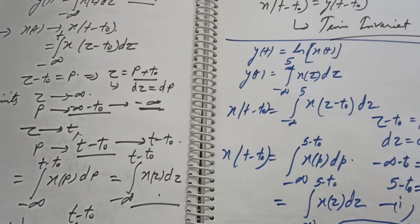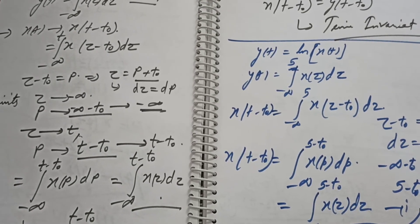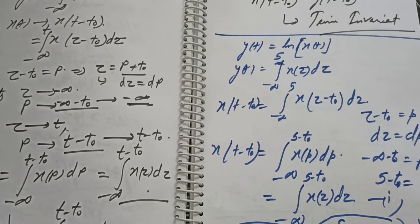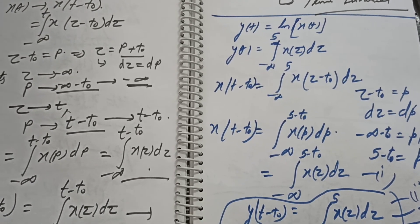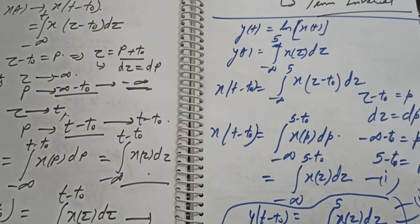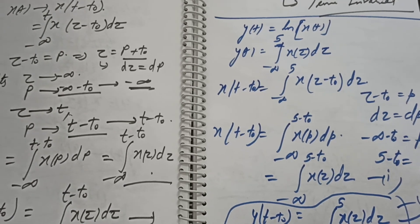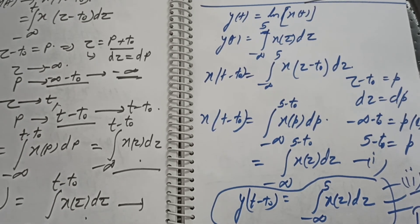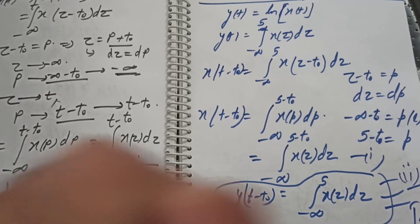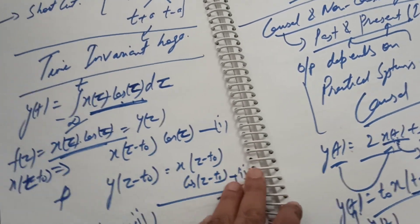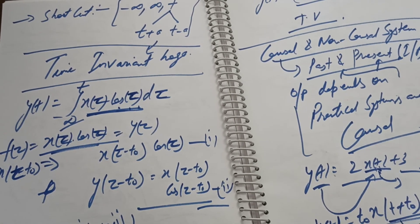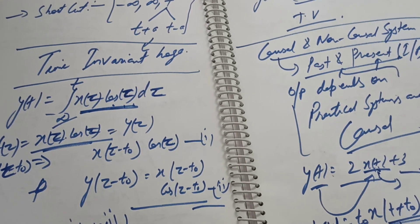Let's take another example: y(t) = ln(x(t)). You can also check y(t) = integral from minus infinity to 5 of x(τ) dτ. The common approach is to put τ minus t-naught equal to p, replace the variable, let the limits of integration change, then check if x(t minus t-naught) and y(t minus t-naught) give the same value. If so, the system is time-invariant. Thank you for this lecture; I will see you in the next class.